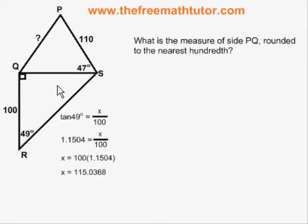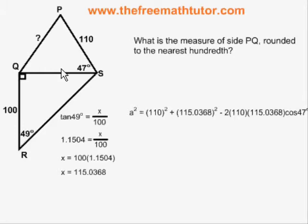So we fill in our cosine law formula like this. Naming our unknown side PQ as side a in the cosine law formula, that makes PS and QS our side b and our side c. So we fill in our cosine law formula with those two sides and with angle 47.